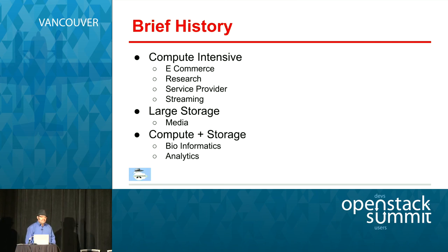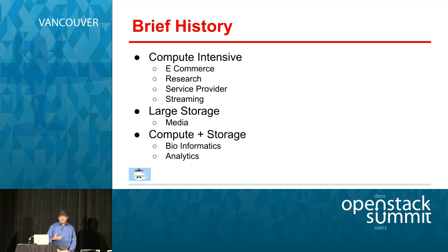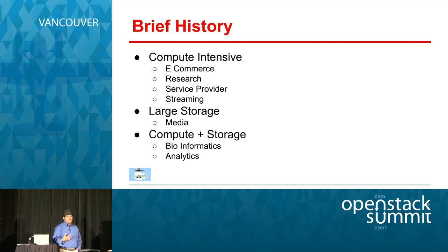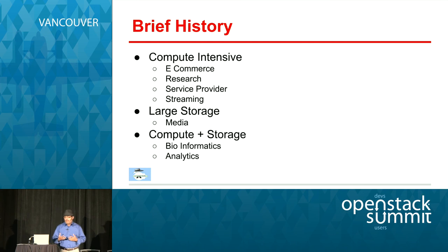Going back in history: in the very early stages people were looking at spinning VMs up and down, so naturally a lot of workloads were around compute-intensive applications. Dev test is a good case there, and at inception service providers were a large use case for OpenStack — primarily around a lot of VMs. Around the same time, users like CERN picked up a lot of HPC workloads, high-performance computing, a lot of compute applications.